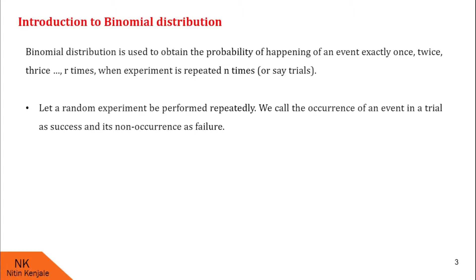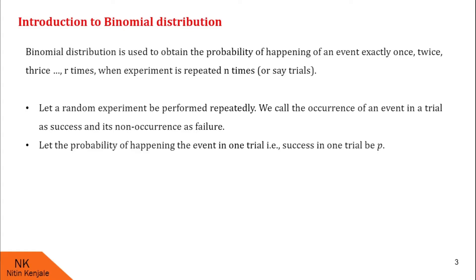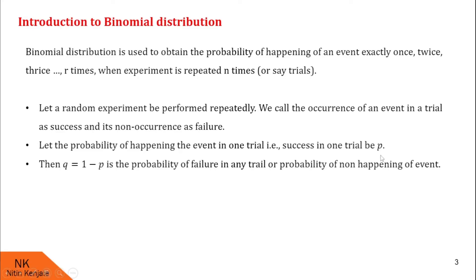Let a random experiment be performed repeatedly, or say n times. We call the occurrence of an event in a trial as success and its non-occurrence as failure. That means if the event occurred, we call it as success; if it does not occur, we call it as failure. Let the probability of happening an event in one trial be p — that is, probability of success is p. Then q is equal to 1 minus p, as the probability of failure in one trial.